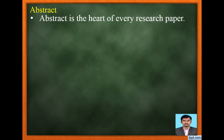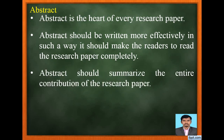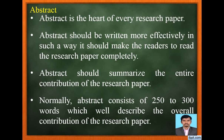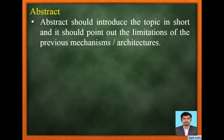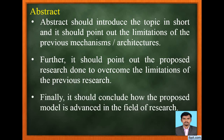Abstract is the heart of every research paper. Abstract should be written effectively in such a way that it makes readers want to read the research paper completely. It should summarize the entire contribution of the research paper. Normally, abstract consists of 250 to 300 words. It should introduce the topic in short, point out the limitations of the previous mechanisms or architectures, present the proposed research done to overcome those limitations, and conclude how the proposed model is advanced in the field of research.